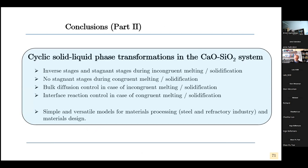As a conclusion, inverse stages and stagnant stages occur during incongruent melting, and no stagnant stages occur during congruent melting-solidification. With quite simple models — bulk diffusion control for incongruent melting and interface reaction control for congruent melting — one can model the kinetics of this phase transformation. These simple and versatile models for materials processing might be applied in the steel and refractory industry and used for materials design.